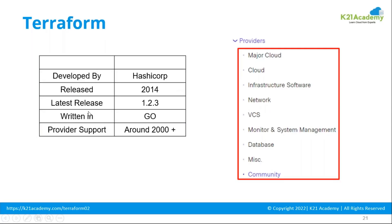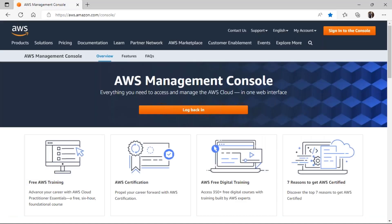Terraform was developed by HashiCorp back in 2014 and the latest version is 1.2.3, which keeps changing — every six months they get a new minor update. It's written in the Go language and provider support is more than 2000. Let me open registry.terraform.io to show you how many providers we have today.